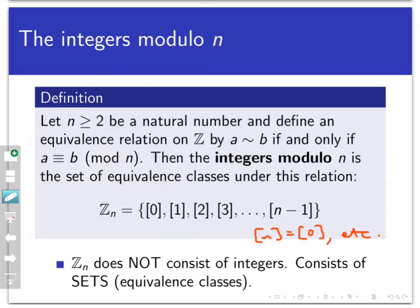One important but subtle point: we call this set the integers mod n, but that's really a misnomer, because this set does not contain integers. The elements inside ℤ mod n are not integers but sets — specifically, equivalence classes. So the integers mod n consists of equivalence classes, which are themselves sets.